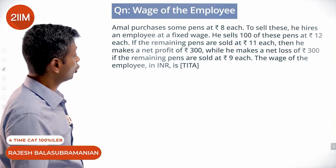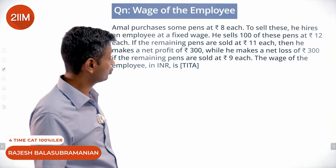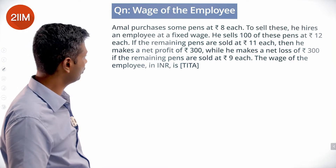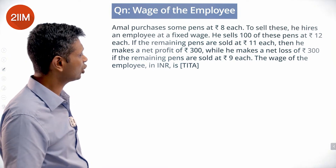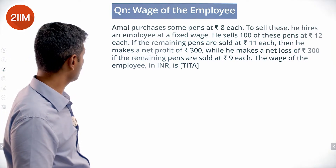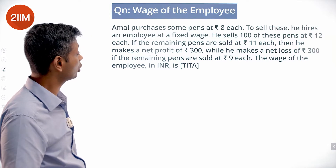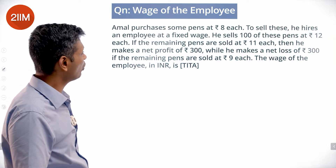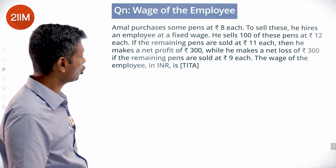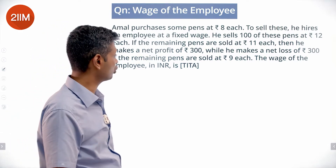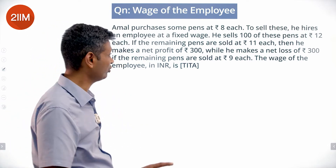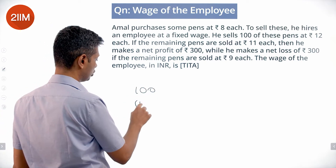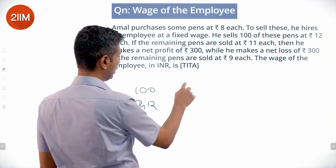Amal purchases some pens at Rs. 8 each. To sell these, he hires an employee at a fixed wage. He sells 100 of these pens at Rs. 12 each. The remaining pens are sold at Rs. 11 each and he makes a net profit of Rs. 300, while he makes a net loss of Rs. 300 when the remaining pens are sold at Rs. 9 each.